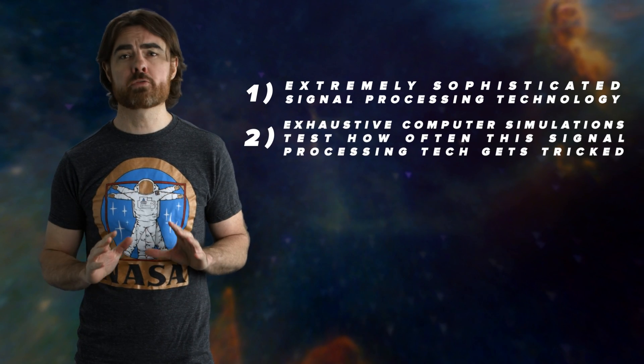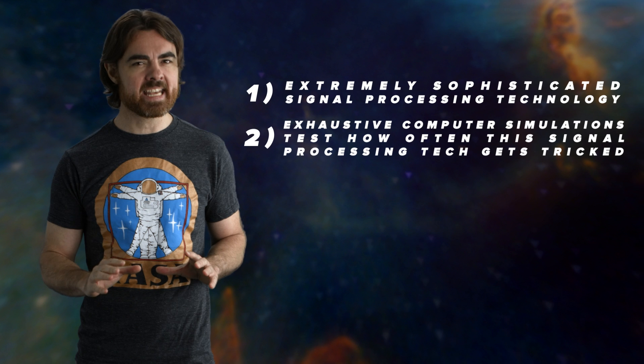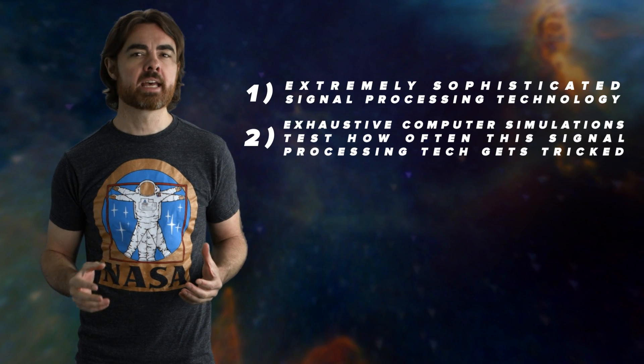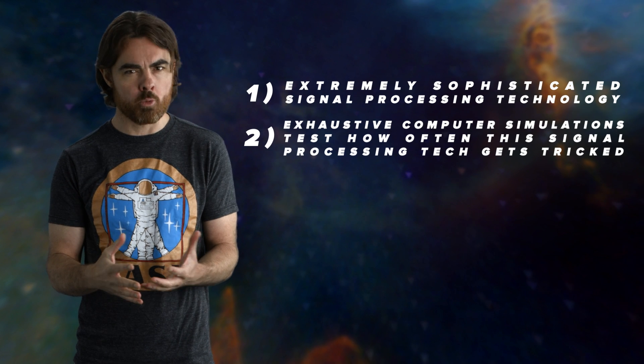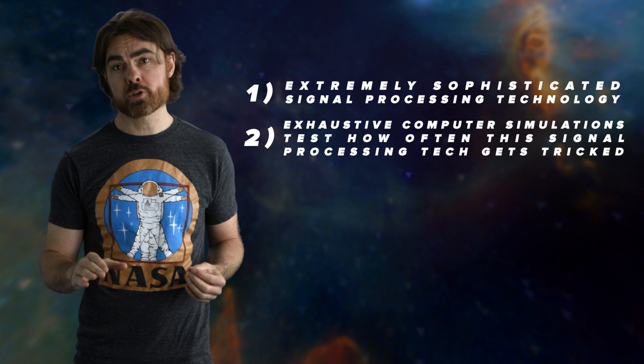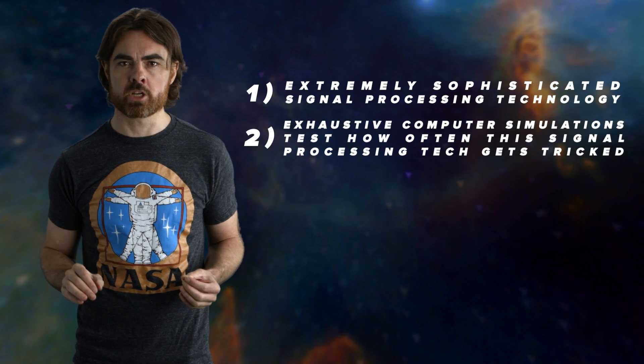Two, exhaustive computer simulations test how often this signal processing tech gets tricked into falsely reporting a detection. The answer is almost never for signals of the sort that were seen last year. As a testament to LIGO's carefulness, they already knew about the December signal when they announced the first gravitational wave detection back in February. However, they hadn't had time to give due care to the newer signal. So they decided to keep quiet about it until they were sure sure.